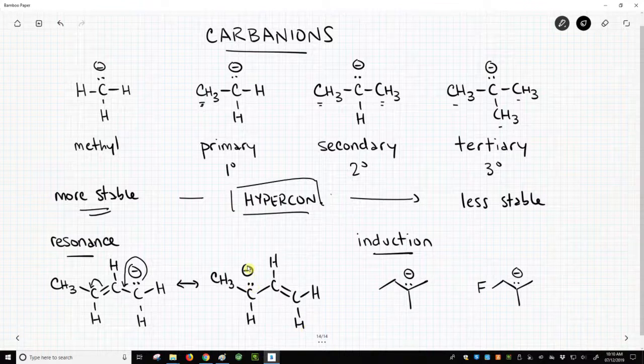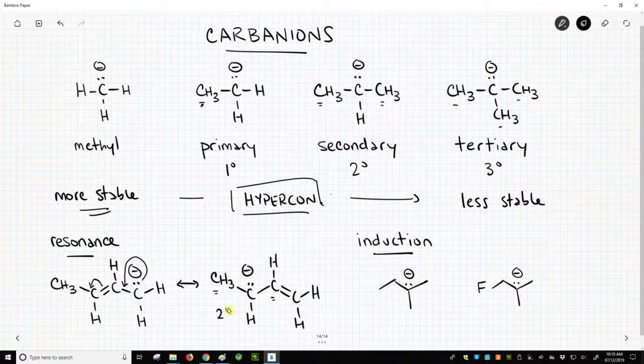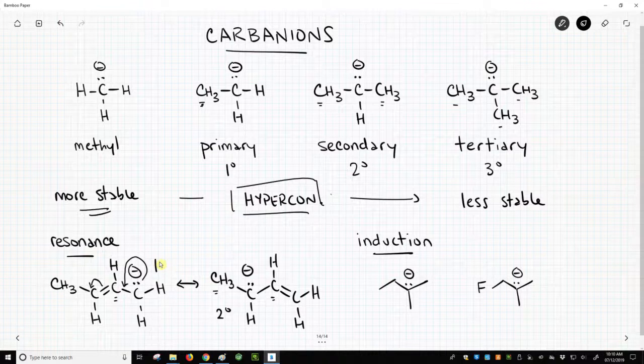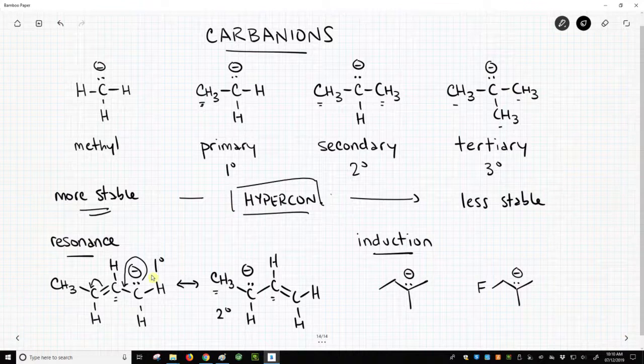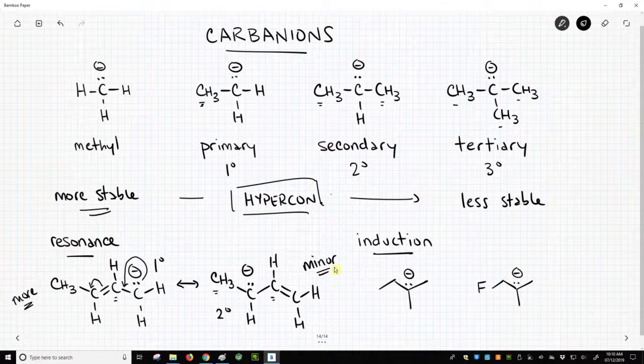When evaluating these two resonance forms, we'd say, well, this carbanion is a secondary carbanion, and this carbanion is a primary carbanion, because there's only one carbon attached to the negatively charged carbon. Therefore, we'd say since this is primary on the left, this is more stable, or this is the major contributor, and this would be the minor contributor on the right. So that's how we think about resonance in carbanions.